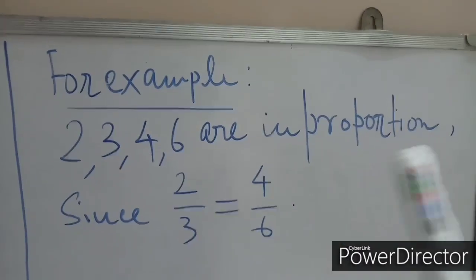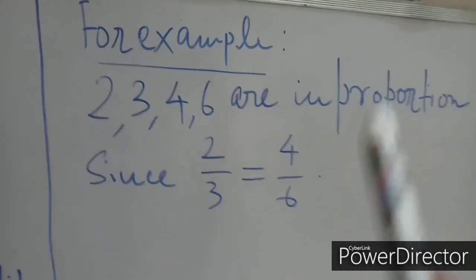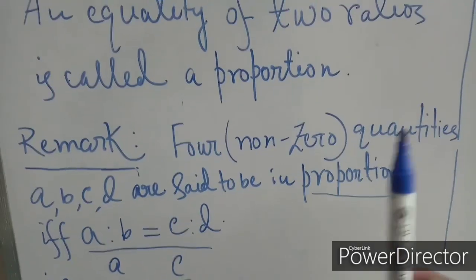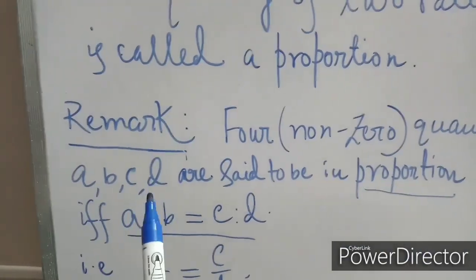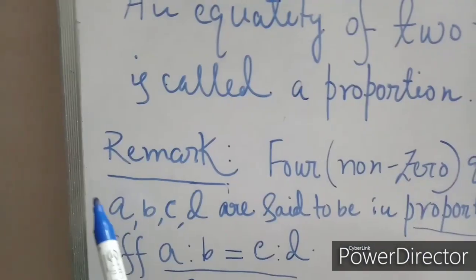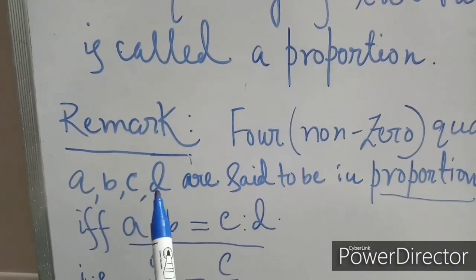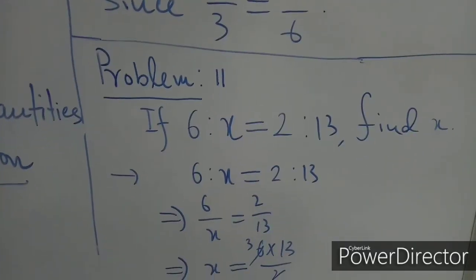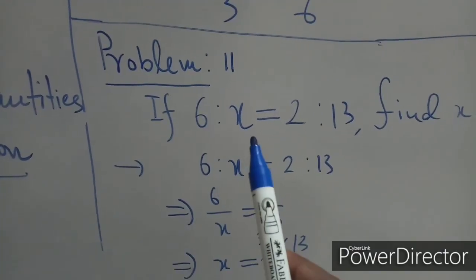For example, 2, 3, 4, 6 are in proportion since 2/3 = 4/6. In the definition of proportion, a, b, c, d are called terms: a is the first term, b is the second term, c is the third term, and d is the fourth term.